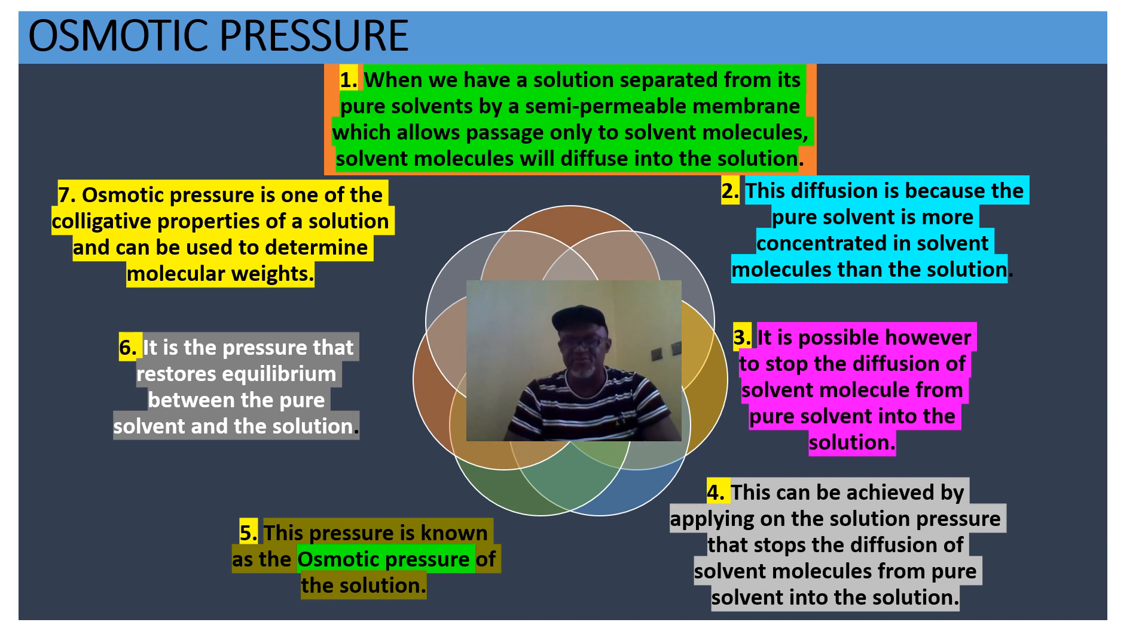It is possible, however, to stop the diffusion of solvent molecules from pure solvent into the solution. This can be achieved by applying on the solution pressure that stops this diffusion. So this pressure is known as osmotic pressure of the solution. We can define osmotic pressure as that which restores equilibrium between pure solvent and the solution. And of course, osmotic pressure is one of the colligative properties of the solution which can be used to determine molecular weight.